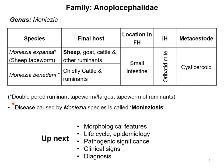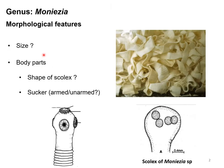These two parasites are commonly known as double-pored ruminant tapeworms. The reason for this name will be explained when we discuss the morphological features. These parasites are also considered one of the largest tapeworms of ruminant species and are responsible for causing an important tapeworm infestation called Monieziosis.